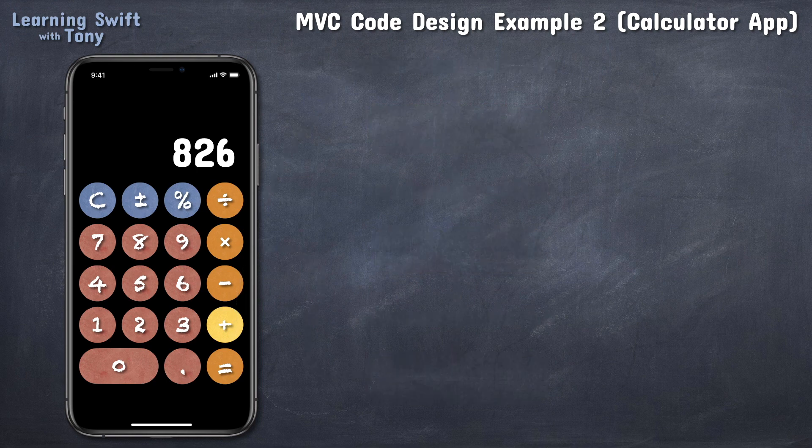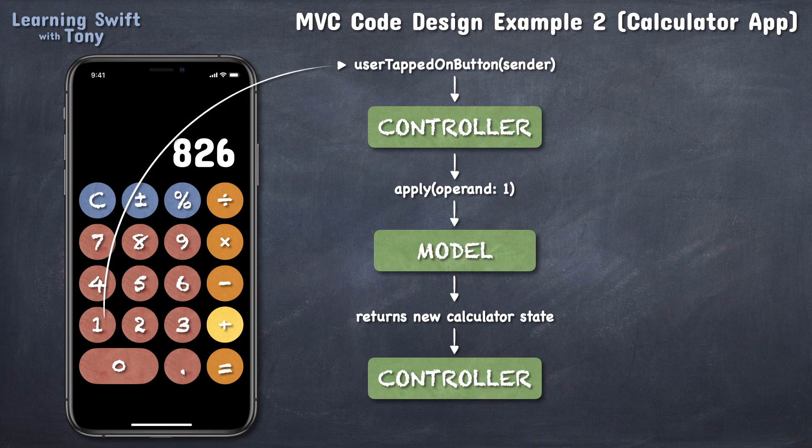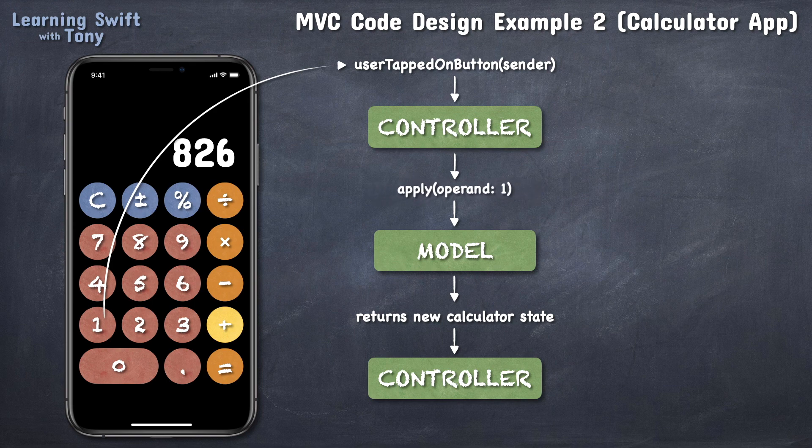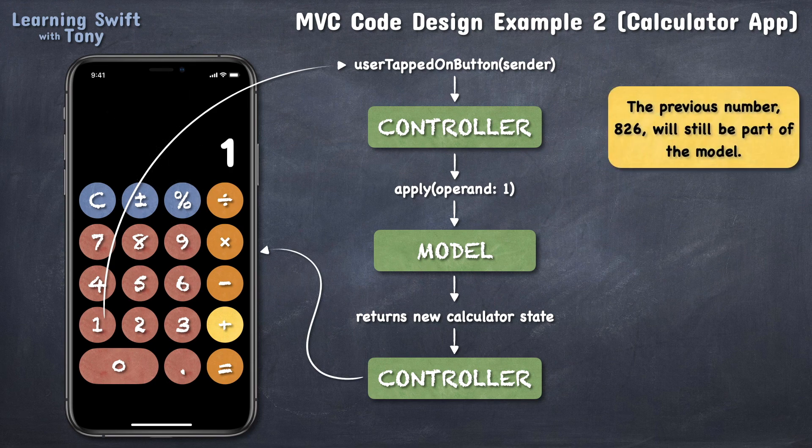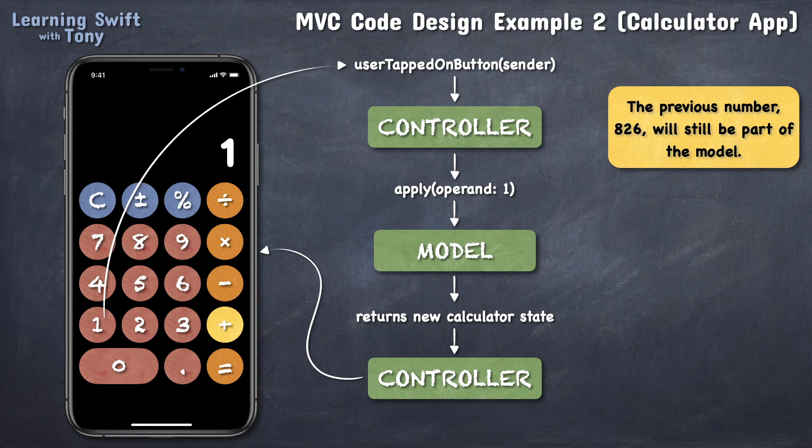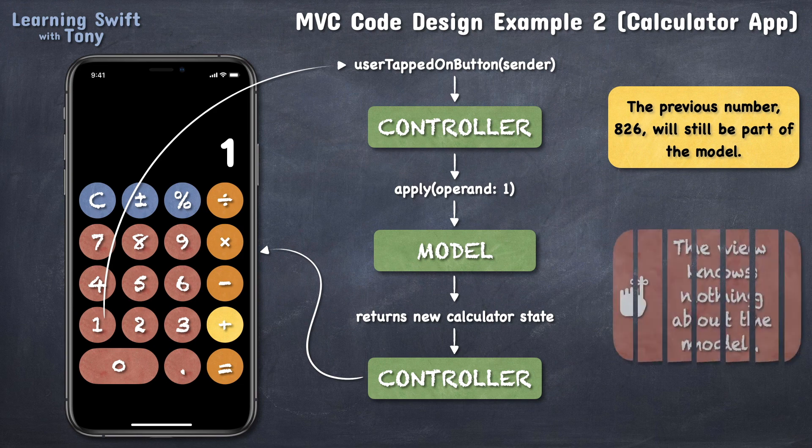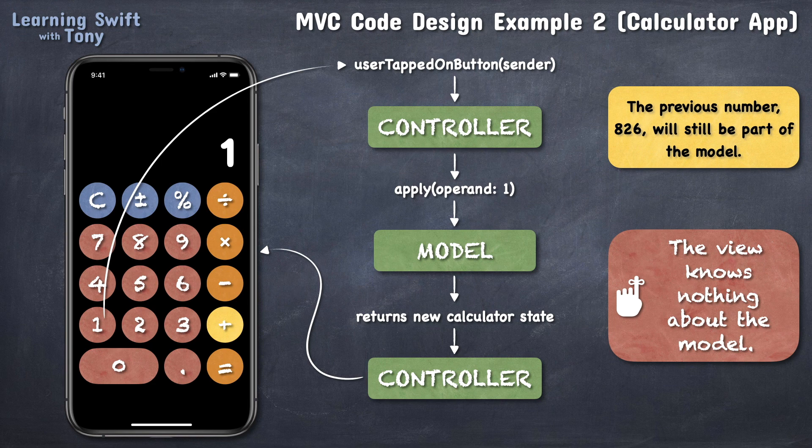If now the user taps on button 1, the entire cycle from the view to the controller, then to the model, and finally back to the controller will take place as before. The message received by the model will be, of course, apply operand 1. The new state received will result in the view displaying the number 1, but the previous number, 826, will still be stored in the model somewhere, since the calculator is still waiting for a second operand for a binary operation. This will be a case where the screen is not reflecting the state of the model completely, which happens often in apps and is perfectly fine. Remember, the view is not aware of the state of the model and it is not in charge with storing any kind of data, hidden from the user or not.